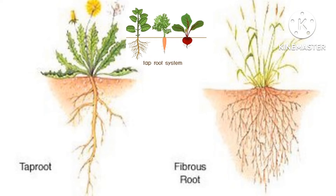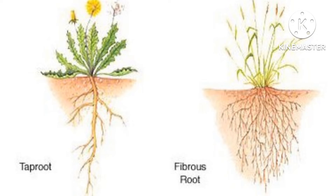Now, fibrous root — fibrous roots have many thin and bushy roots. They grow from the end of the stem. There is no main root. Plants like grass, rice, wheat, and onion have fibrous roots.